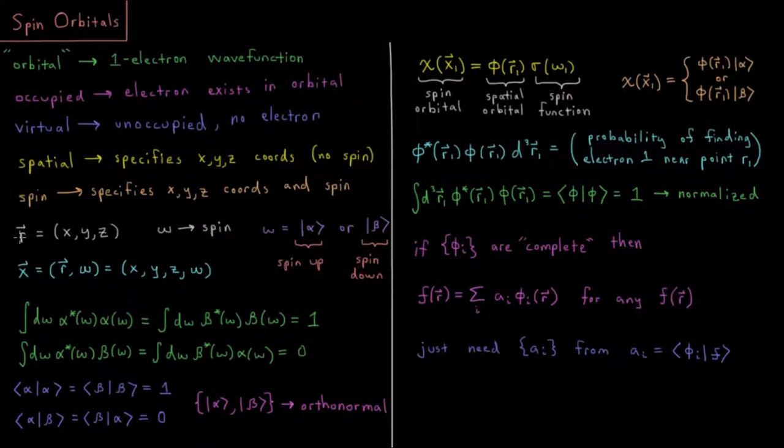We would indicate Cartesian positions by the vector r, which indicates the x, y, and z coordinates in three-dimensional Cartesian space.